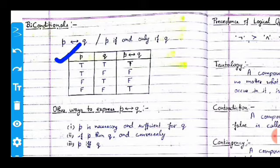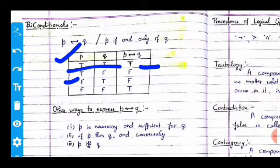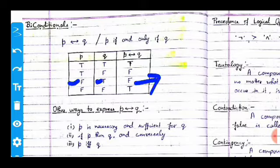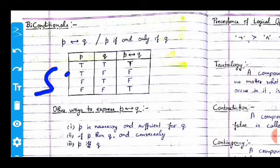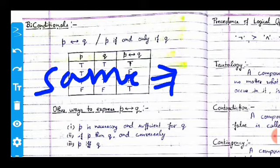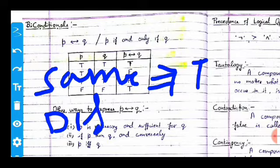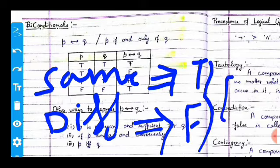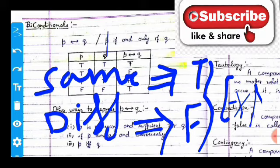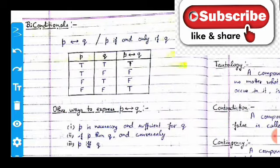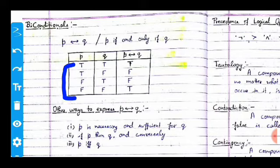Looking at the truth table of the biconditional: if p is true and q is true, it produces true. If p is true and q is false, it produces false. If p is false and q is true, it produces false. If both p and q are false, it produces true. So same values produce true, and different values produce false — this is equivalent to the XNOR gate.